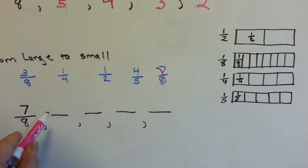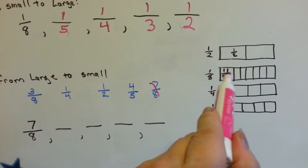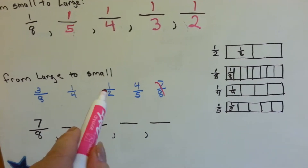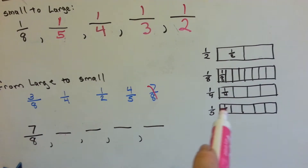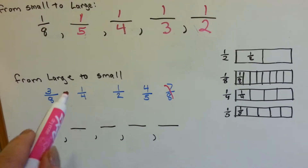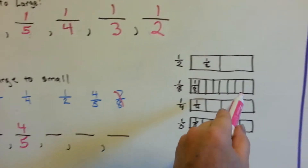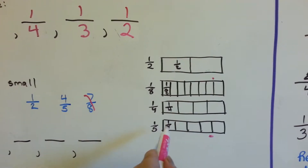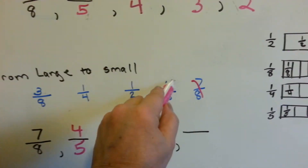What would be the next smallest? Would it be three-eighths — one, two, three, that's this amount — one-half, which is all of this, or four-fifths — one, two, three, four, that would be all of these? The next smallest would be four-fifths, because seven-eighths took us to here and four-fifths takes us to just a smidge smaller. So now four-fifths is done.